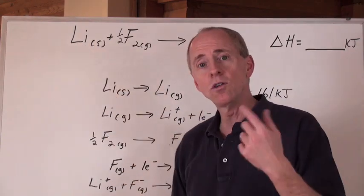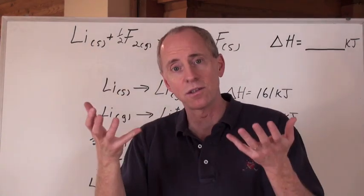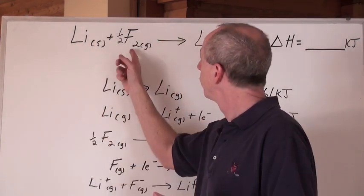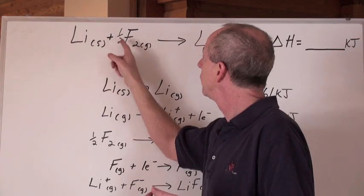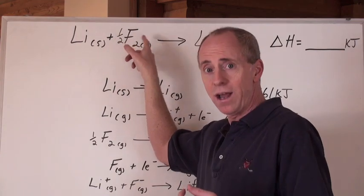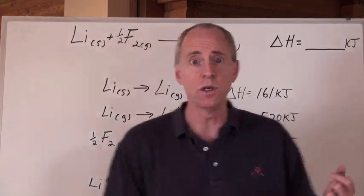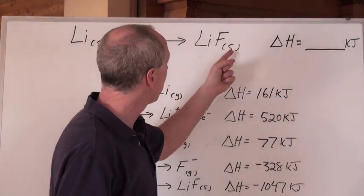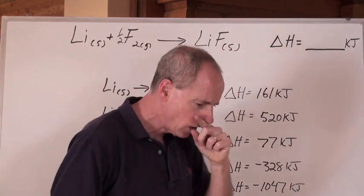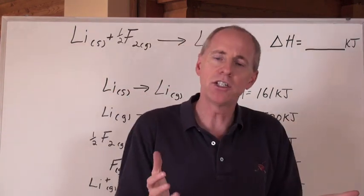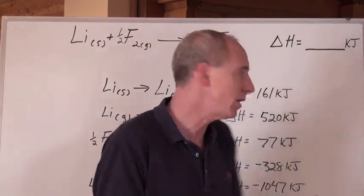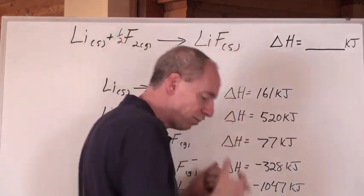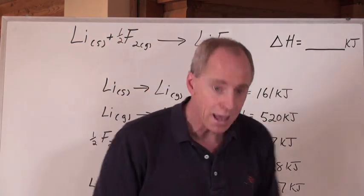Here's lithium solid. Lithium is an alkali metal. If we react it with fluorine gas, according to this equation, balancing for a half F2 to get one mole of LiF solid, which is an ionic compound — how much energy does that take to be able to make this chemical here, which has a bond in it?